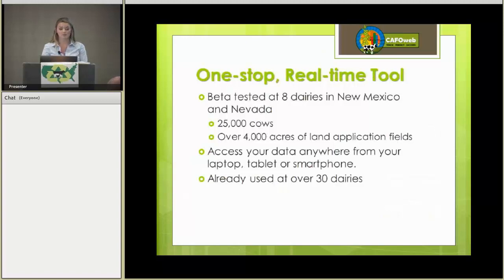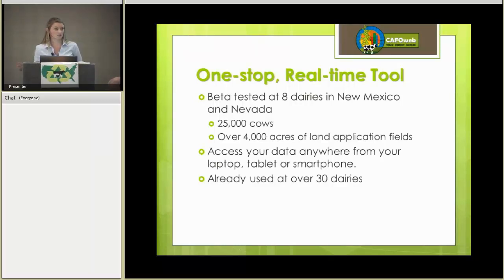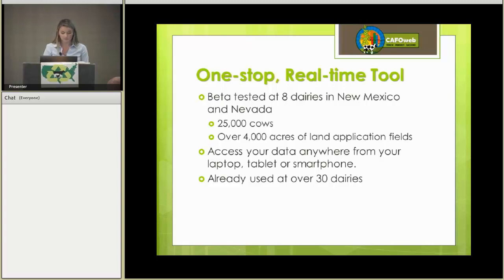CAFO Web is that one-stop, real-time tool. We beta tested in New Mexico and Nevada at over eight dairies with over 25,000 cows and over 4,000 acres of land application fields. With CAFO Web, you can access your data anywhere you have an internet connection — from your laptop, tablet, or smartphone — which gives you the ability to be in your field with your smartphone entering your meter readings. CAFO Web uses this data to then give you real-time data that can be used for reports and graphs.